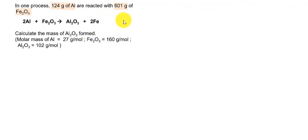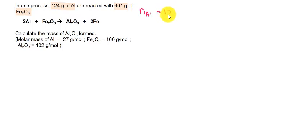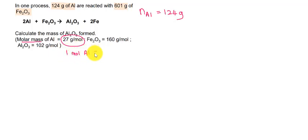So how do you determine the limiting reactant? First step: you must calculate the number of moles of each reactant. So first, let's find the number of moles of aluminium. The mass of aluminium given is 1.24 grams, and the molar mass is already given in the question for aluminium — 27 grams per mole. So we know that in 1 mole of aluminium there are 27 grams.